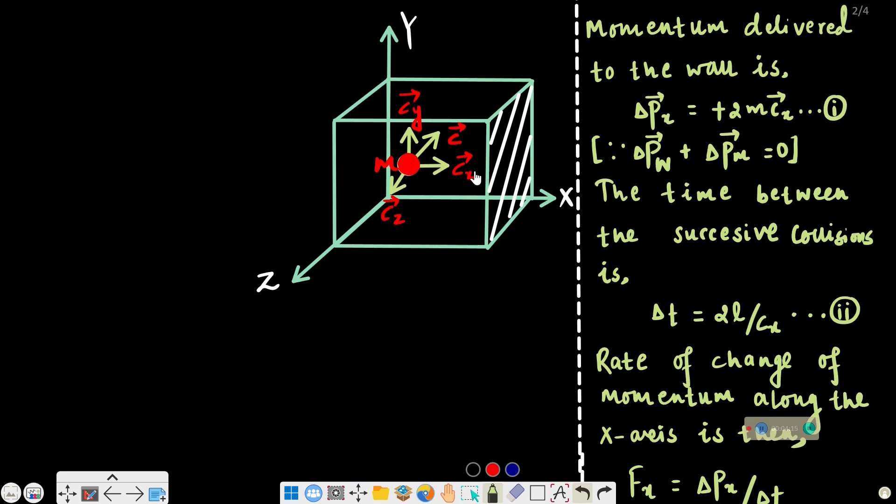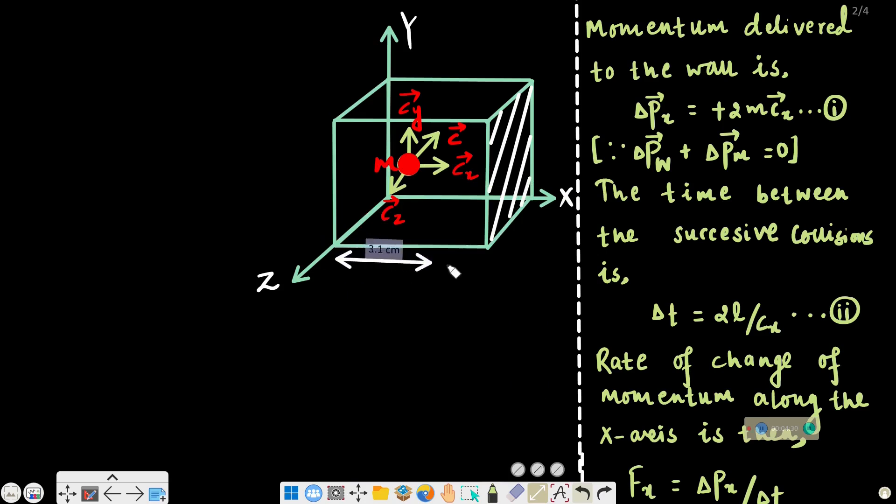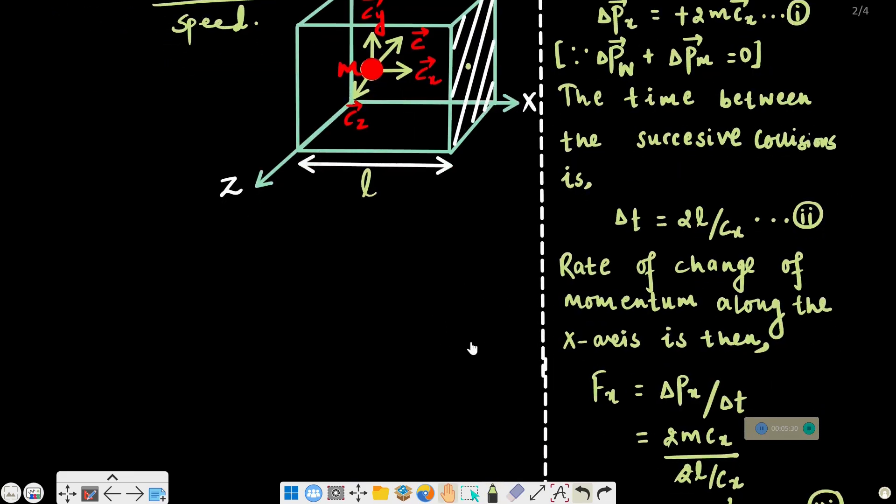Now, this molecule will collide with the wall, then go to the opposite wall and come back. The cubical vessel has side L. The distance traveled is 2L and the time between two collisions is del t equals 2L divided by cx.